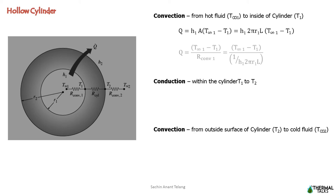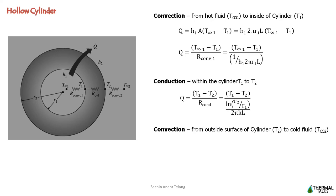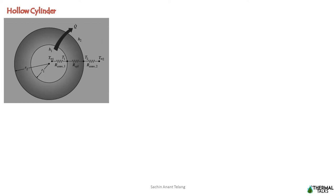Here A is the inside surface area of the cylinder, 2πR1L. From the concept of thermal resistance, Q = (T∞1 - T1) / convective thermal resistance. For conduction, Q = (T1 - T2) / conductive thermal resistance, which we have recently derived. And for the outside surface, Q = (T2 - T∞2) / convective thermal resistance at the outer surface.